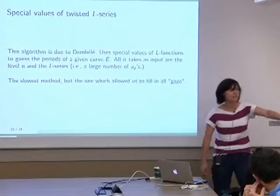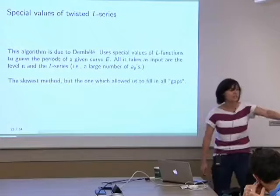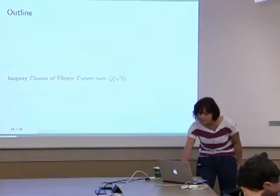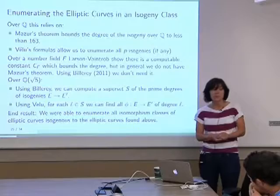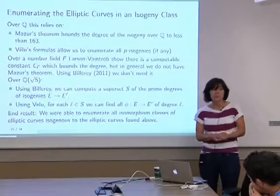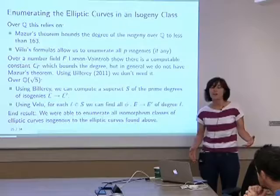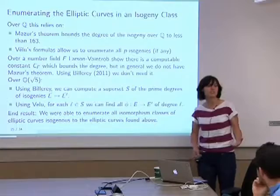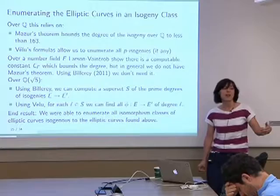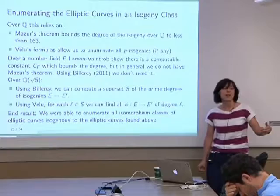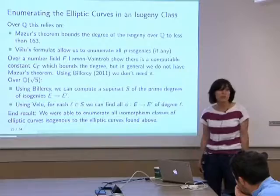Using all of these different methods together, we were able to come up with a table of elliptic curves over Q(√5) analogous to Cremona's table. Dembele's method is very slow and requires thousands and thousands of a_p's. Once we had one curve in the isogeny class, we were able to compute the rest. As was noted earlier, in Cremona's tables for Q you use Vélu's formulas to enumerate all p-isogenies, but to know when to stop you use Masser's bound — which is not an effective theorem. Using recent work of Billerey, we can compute a superset S of the prime degrees of the isogenies, and from that use Vélu's formulas without needing to know a bound a priori.